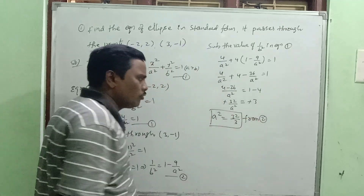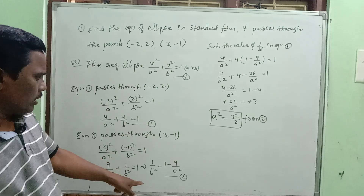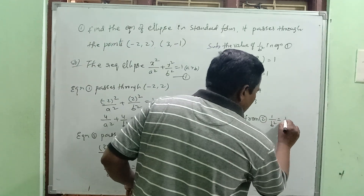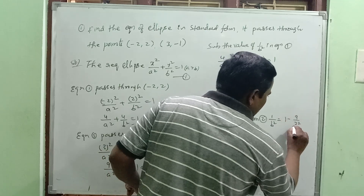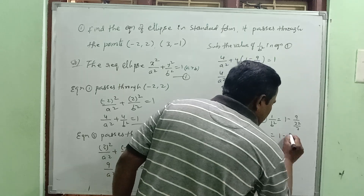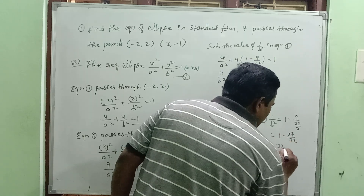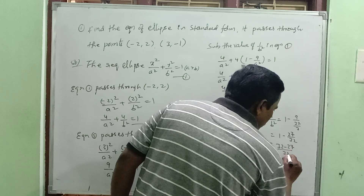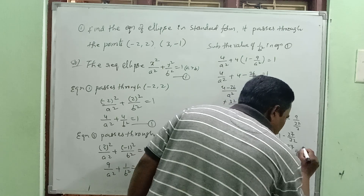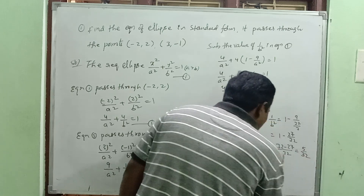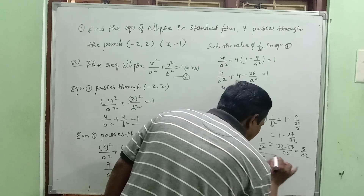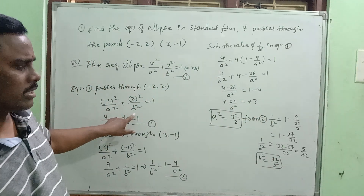The value of a squared is 32 by 3. Substituting back into equation two: one by b squared equals one minus nine divided by 32 by 3. That gives one minus 27 by 32, which equals 32 minus 27 by 32, which is 5 by 32. So one by b squared equals 5 by 32, meaning b squared equals 32 by 5. We now have both a squared equals 32 by 3 and b squared equals 32 by 5.